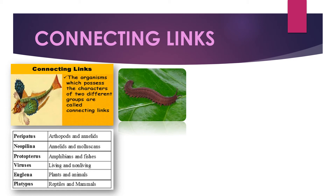A connecting link proves the theory of evolution — it is something that is in between two groups of animals. When an animal like Peripatus is between Arthropoda and Annelida, it shows clearly that it is in the process of evolution, developing from Annelida and progressing toward Arthropoda. A creature that does not have the full characteristics of either group but is in between is called a connecting link.